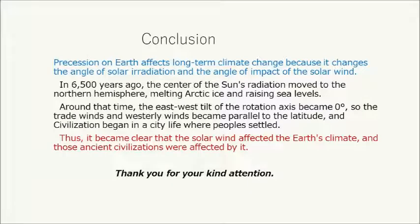In conclusion, precession on Earth affects long-term climate change because it changes the angle of solar irradiation and the angle of impact of the solar wind. Around 6,500 years ago, the center of the sun's radiation moved to the northern hemisphere, melting Arctic ice and raising sea levels. Around that time, the east-west tilt of the rotation axis became zero degrees, so the trade winds and westerly winds became parallel to the latitude, and civilization began in city life where people settled. Thus, it became clear that the solar wind affected the Earth's climate, and that ancient civilizations were affected by it.